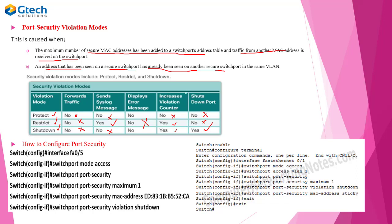To configure port security, first enter the interface, then set it to access mode. Then type 'switchport port-security' to enable it. Next, set 'switchport port-security maximum 1' to allow only one MAC address on that port. Then specify the MAC address manually. Finally, set the violation mode with 'switchport port-security violation shutdown', which means: the port will not forward traffic, will not send syslog, will not display error messages, but will increase the violation counter and shut down the port.